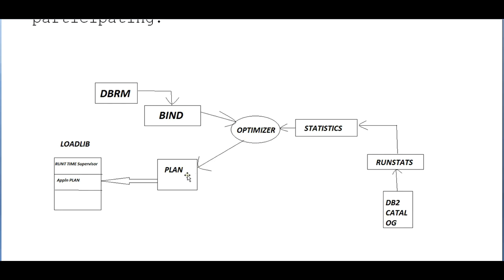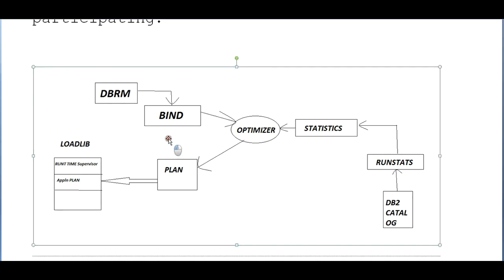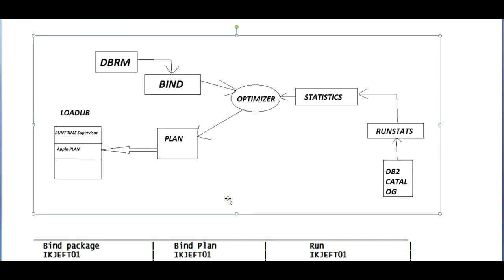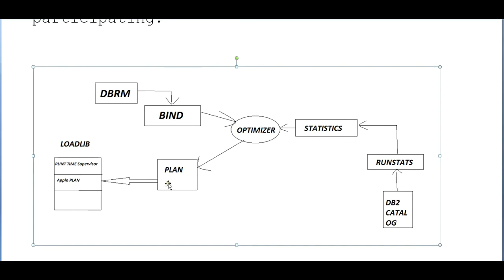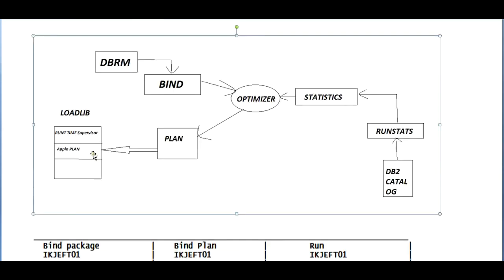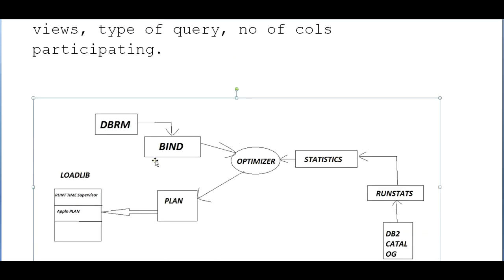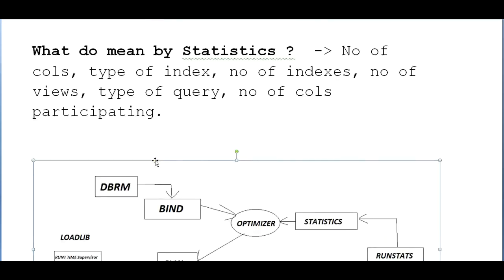In the bind step, first a package is created and then a plan. The DBRM is processed using the DSNJFTUI utility through the bind step. The optimizer uses run statistics information such as number of indexes and number of rows. These plans are combined together into a load library which serves as a runtime supervisor along with the application plan, completing the DB2 COBOL plus DB2 compilation.